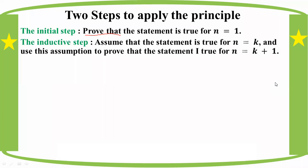The second step in Mathematical Induction: assume that the statement is true for n equal to k. Using this assumption, show that the statement is also true for n equal to k plus one.